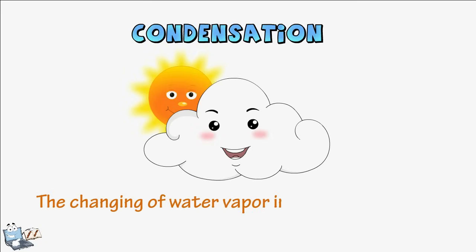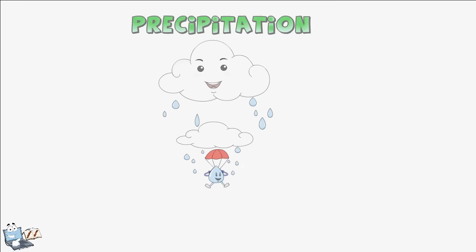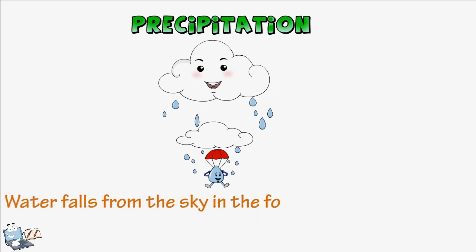Condensation: the changing of water vapor into water droplets is called condensation. Precipitation: water falls from the sky in the form of rain, snow, or hail. This process is called precipitation.